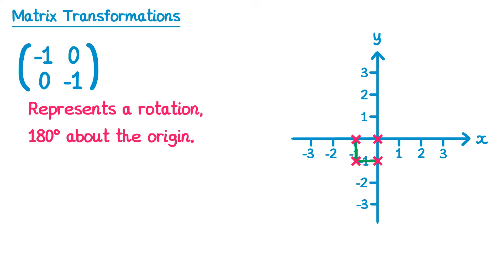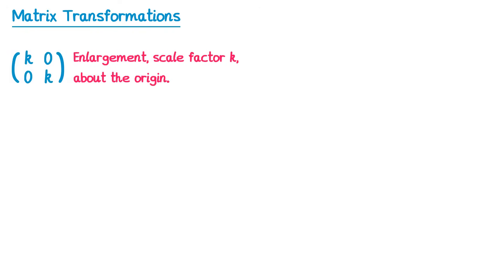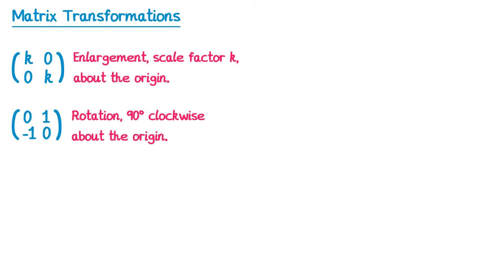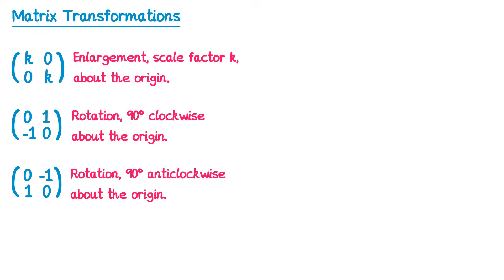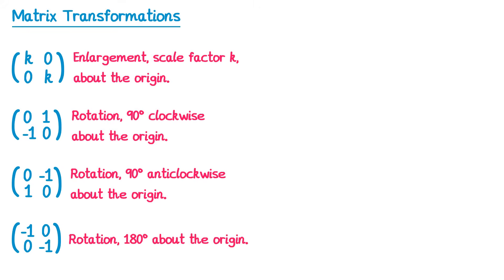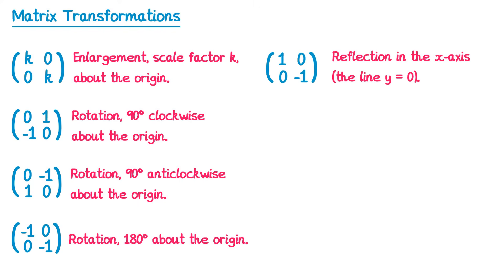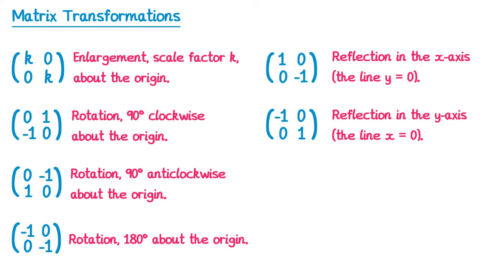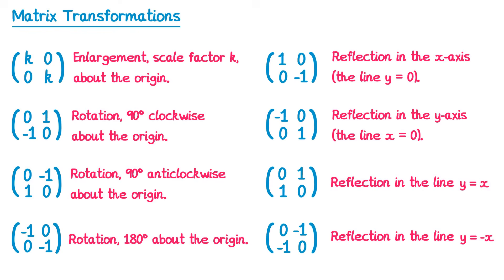And that's all of the matrices you need to know. Let's review: a matrix with k on the diagonals and zeros elsewhere is an enlargement scale factor k about the origin. The matrix [0 1; -1 0] is a rotation 90 degrees clockwise about the origin, [0 -1; 1 0] is 90 degrees anticlockwise, and [-1 0; 0 -1] is a rotation 180 degrees about the origin. We also have four reflections: [1 0; 0 -1] in the x-axis, [-1 0; 0 1] in the y-axis, [0 1; 1 0] in the line y equals x, and [0 -1; -1 0] in the line y equals negative x. You need to know all eight of these transformations for your exam.